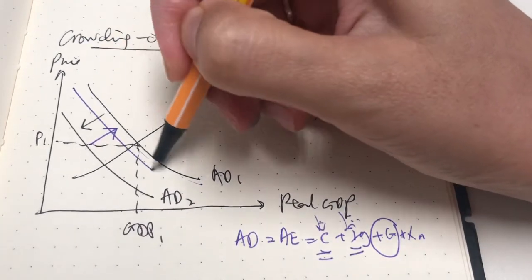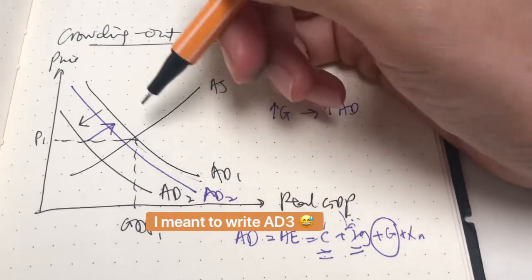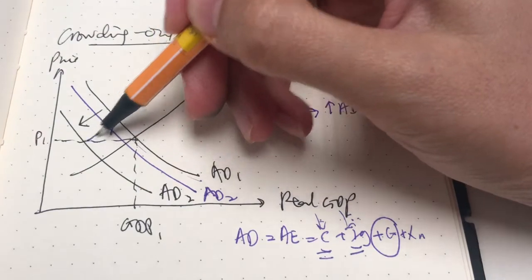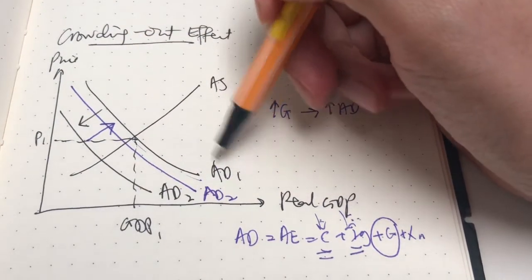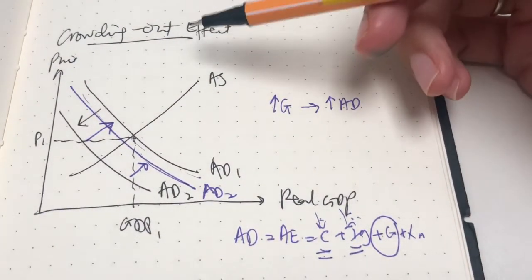Rather it would be maybe somewhere here. This would be the final aggregate demand curve. In other words, to keep it simple, aggregate demand curve would not go back to the original AD1, but it will just stop up to here. This is what it means by the crowding out effect.